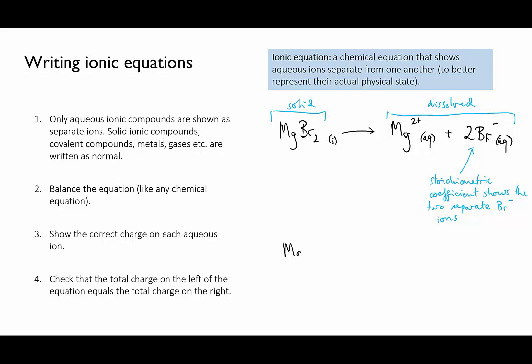Third, we have to show the charges on the separated ions. If I were to write this equation like this, without charges, it would be incorrect since plain Mg represents a neutral magnesium atom when in fact it's a magnesium ion that we have here. Remember an ionic compound is made of ions in a lattice when it's in its solid form and those ions are still ions when they dissolve and separate in water.